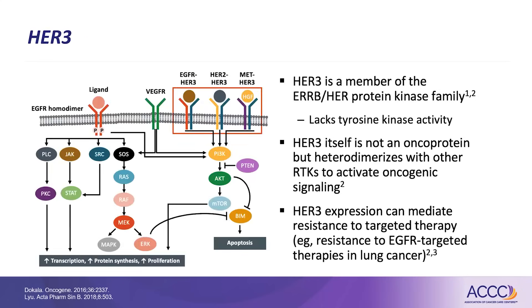First, we'll talk about HER3. This is a complicated slide, but one we've seen not uncommonly. To remind everybody, HER3 is a member of the ERB-B or HER protein kinase family. There are a lot of interactions, and it usually starts with the ligand binding the EGFR homodimer at the beginning of this pathway, with a big signaling cascade. By itself, HER3 lacks tyrosine kinase activity and is not an oncoprotein, but heterodimerizes with other tyrosine kinases to activate oncogenic signaling. HER3 expression can mediate resistance to targeted therapy, for example, resistance to EGFR-targeted therapies in lung cancer.